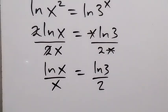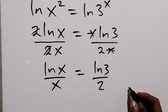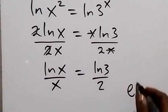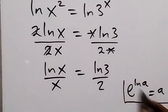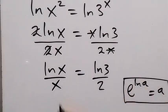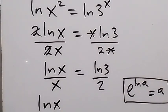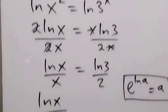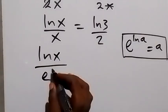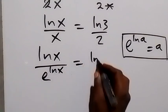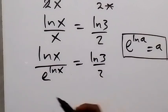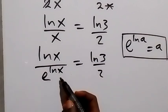From here we can write x again using the identity: e raised to the power ln(a) is the same as a. In the same way, we write x as e^(ln x). This gives us ln(x) over e^(ln x) equals ln(3)/2.